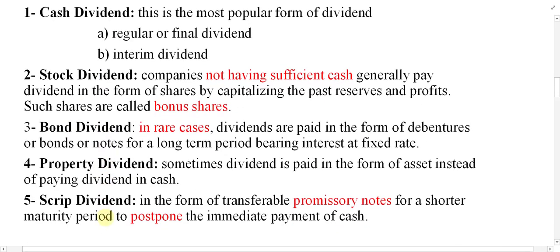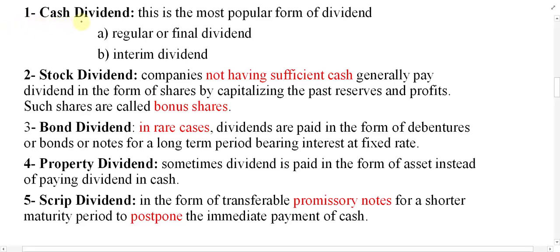Let us first start with cash dividend. Simply put, if a dividend is paid in the form of cash, that is called a cash dividend. The company can pay a cash dividend when there is sufficient or surplus cash available in the business and there is no investment opportunity. In that case, the board of directors may distribute cash among the shareholders in the form of dividend.